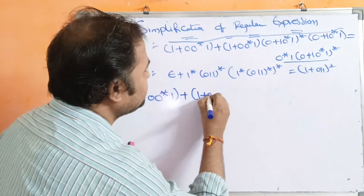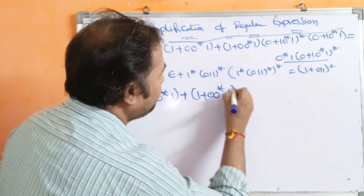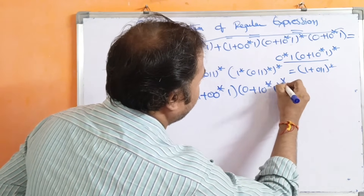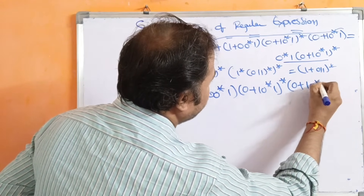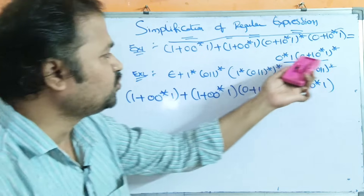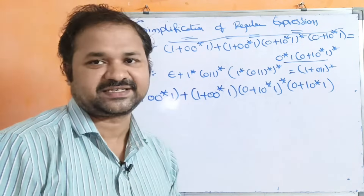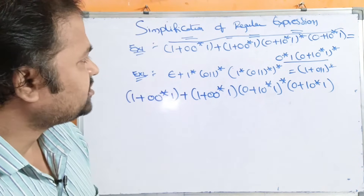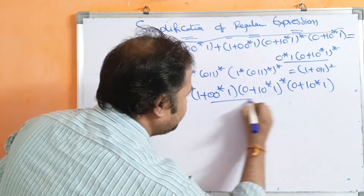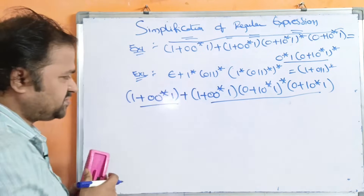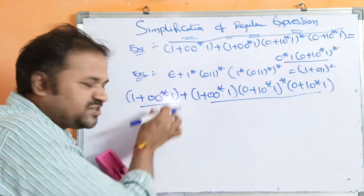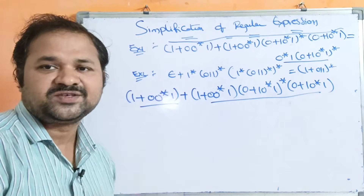The full LHS is: (1 + 00*1) + (00*1)(0+1)(00*1)* · (0+1)(00*1)*. This is the LHS we have to prove. If we observe here, we have two terms — first term and second term. The expression (1 + 00*1) is present in both terms, so we can factor it out as a common term.